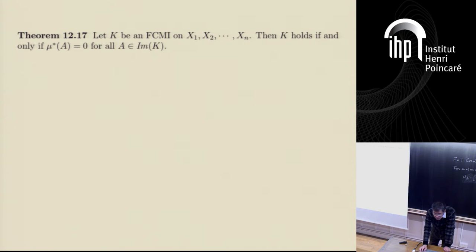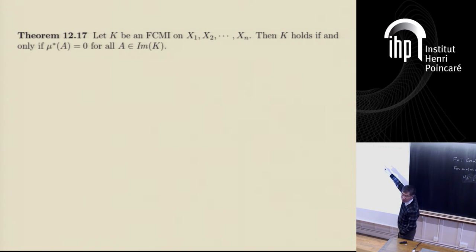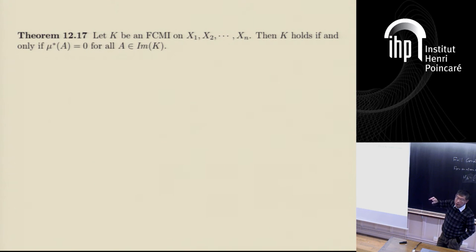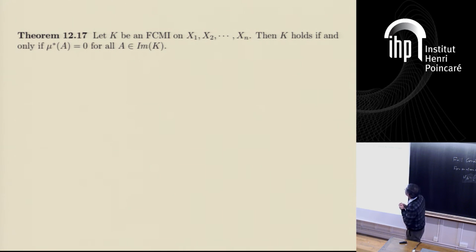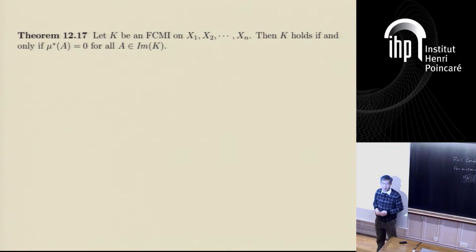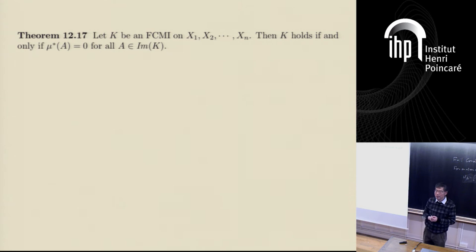So this is the punchline for this part of the tutorial. This theorem says: let k be an FCMI on X1, X2, ..., Xn. Recall the three examples I gave — in the first two, the Markov or independence condition was able to force some atoms to zero. But for the last one it didn't force any atoms to zero precisely because it's not an FCMI — one random variable was missing. So this theorem is about FCMI: k holds if and only if mu-star of a equals zero for all atoms in the image of k.